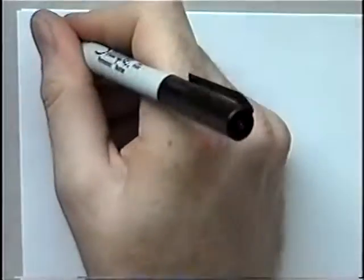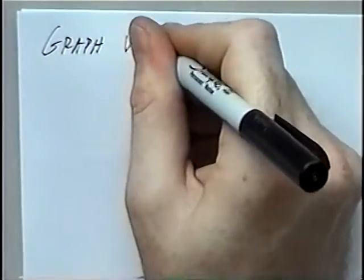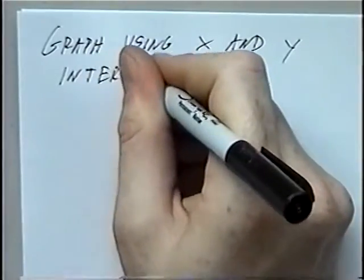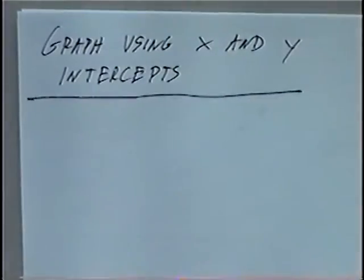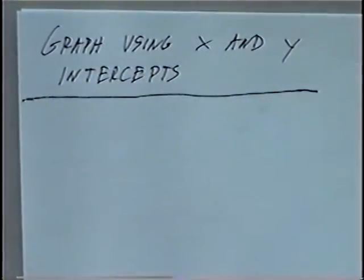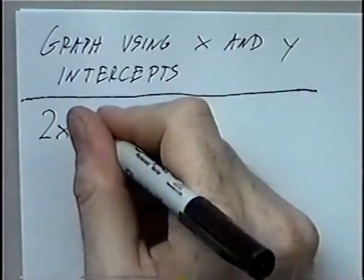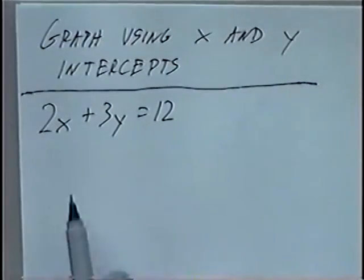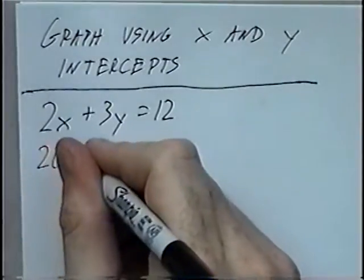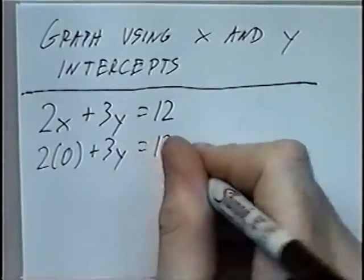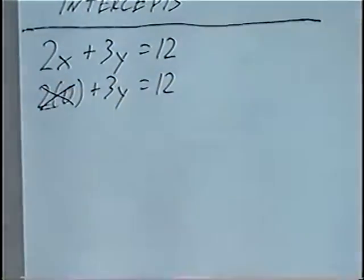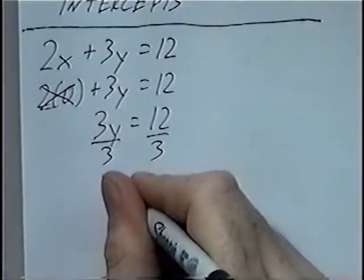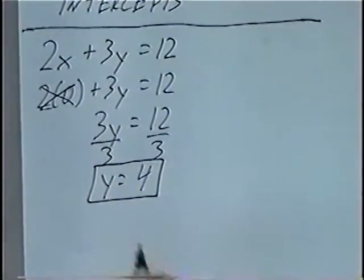The title of the last section today is Graph Using X and Y Intercepts. In this section we'll graph using the X and Y intercepts like we found in the previous section. The first equation is 2X plus 3Y equals 12. To find the intercepts, we can replace one of the variables with a zero. If we do X first, that would be 2 times 0 plus 3Y equals 12. 2 times 0 is 0, so we'll have 3Y equals 12, and dividing both sides by 3, Y equals 4. So the Y intercept would be 4.